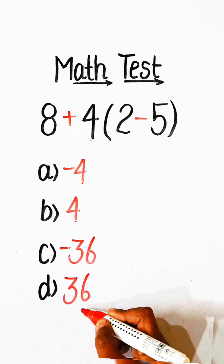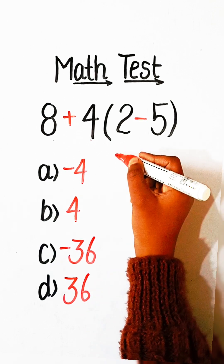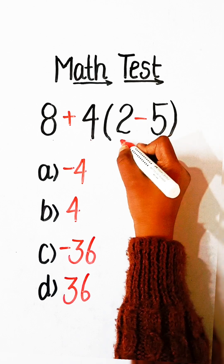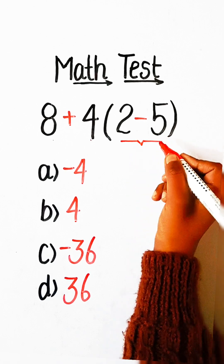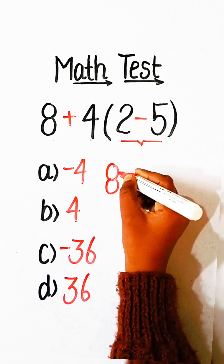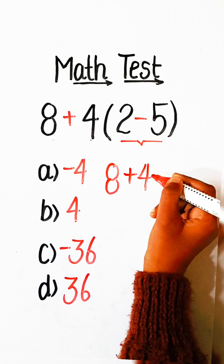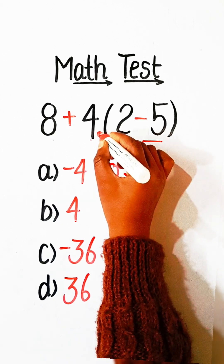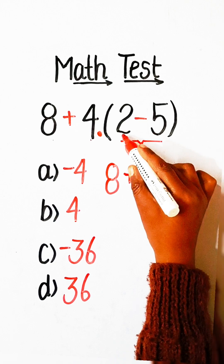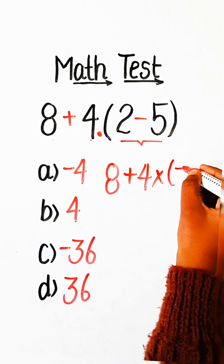So let's solve this. First we have to solve the bracket, so we write 8 plus 4, multiply by — and 2 minus 5 is minus 3.